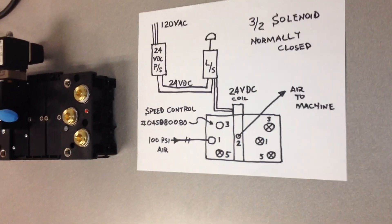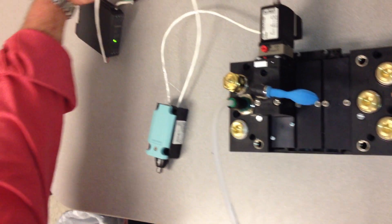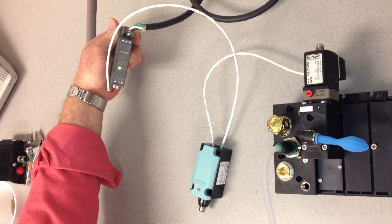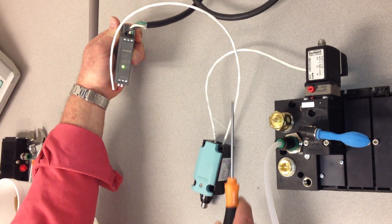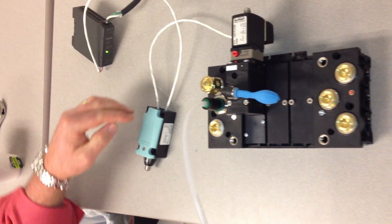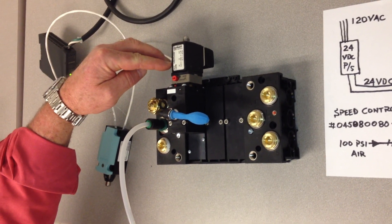Let's come over here and actually take a look at the hardware. Here's our 120 volts coming in to a 24-volt power supply. The power, 24 volts, is coming to this mechanical limit switch, and from there it's being fed to the solenoid valve.